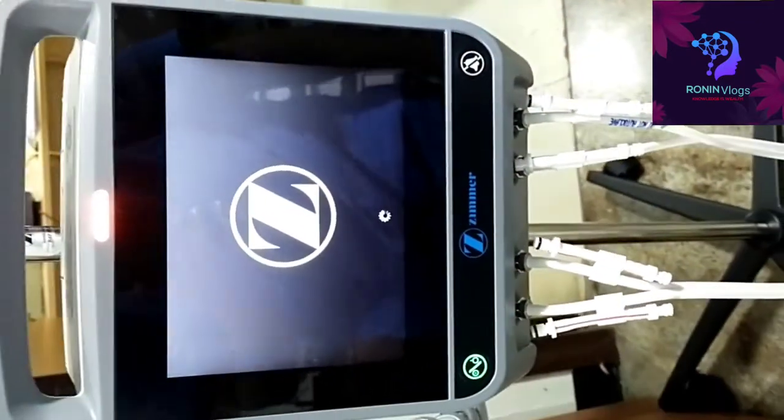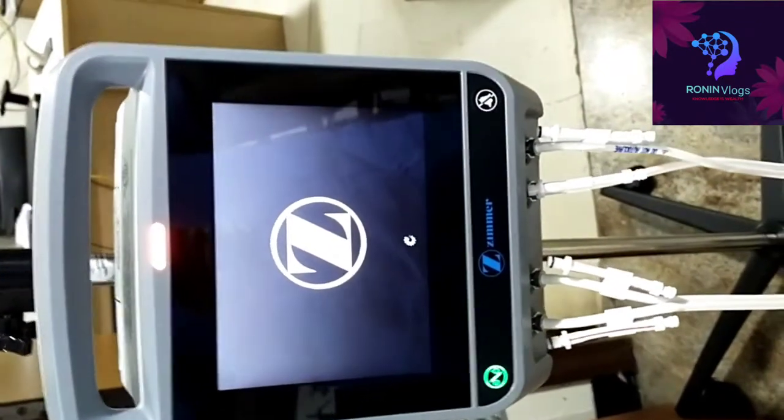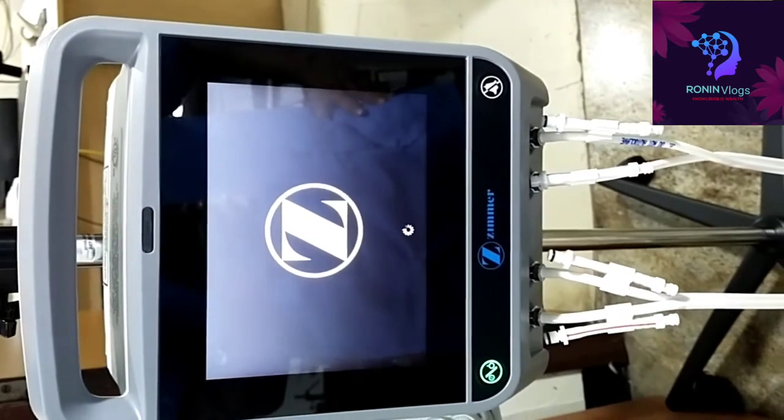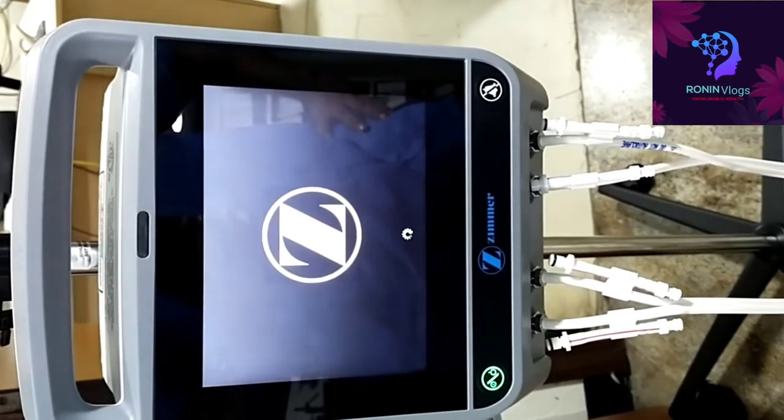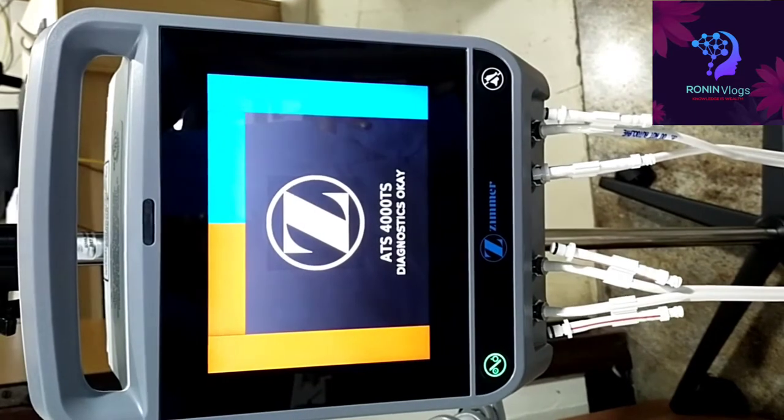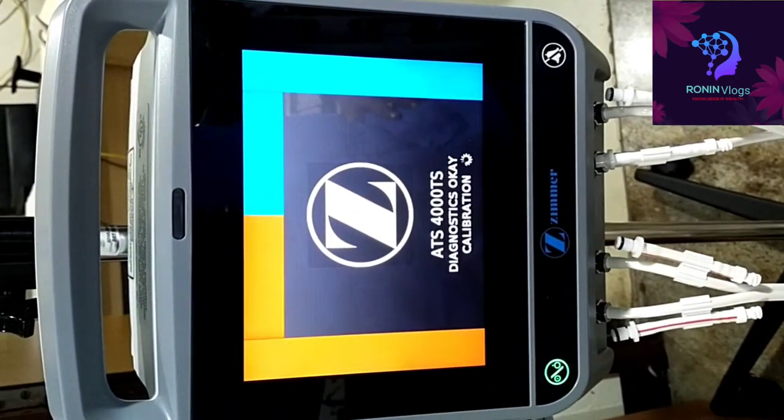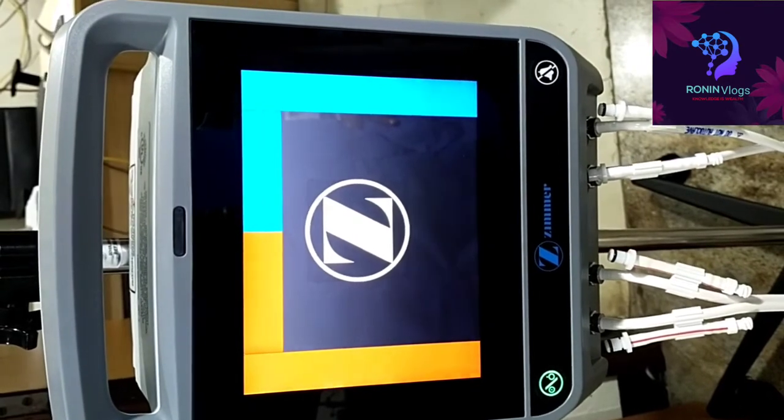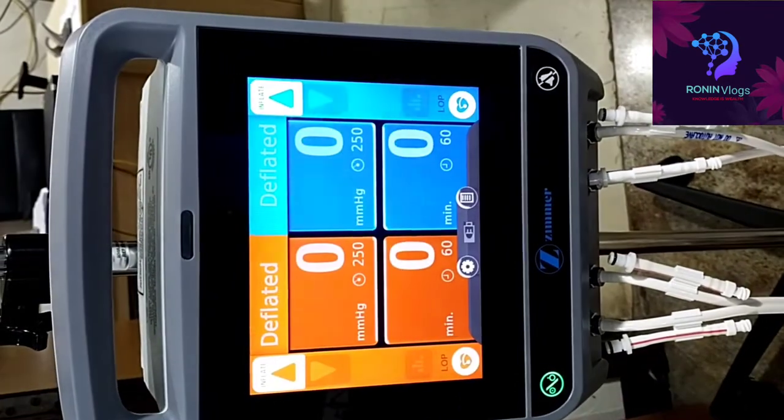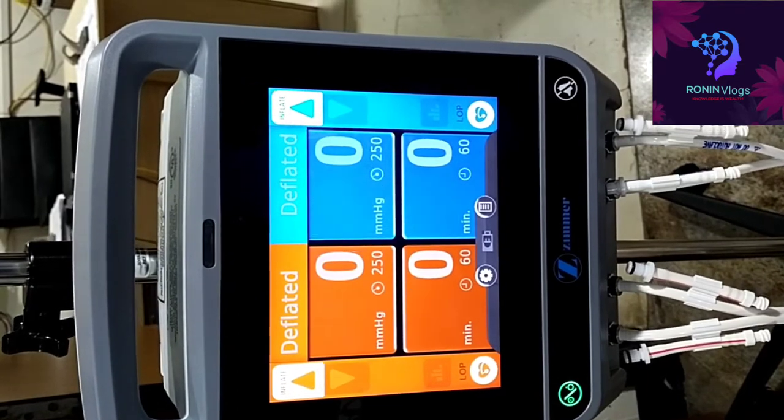Now switch on this button. The model name and self checking will happen. It is 4000 TS. Now automatic calibration also done.